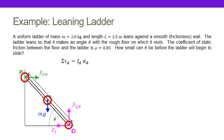Instead, I notice that point Q — the floor — has two unknown forces: the frictional force and the normal force of the floor. So if I pick that as my axis of rotation, I'll have fewer unknowns in my torque equation.